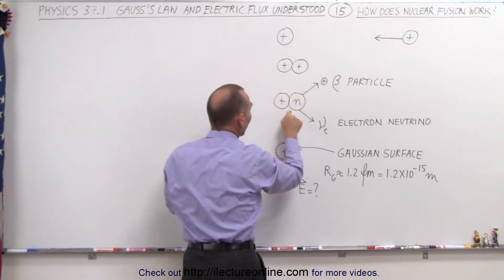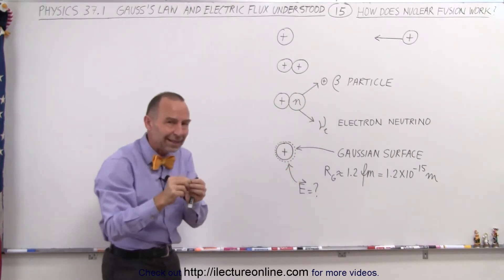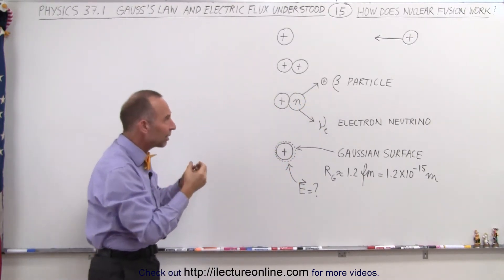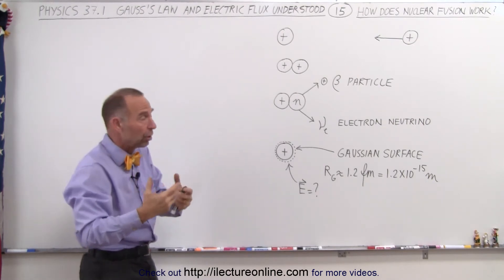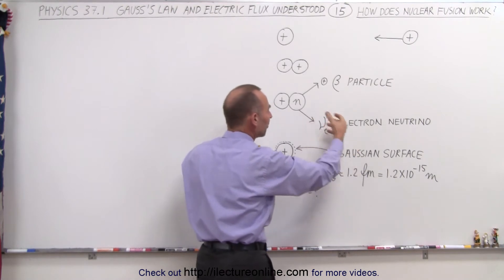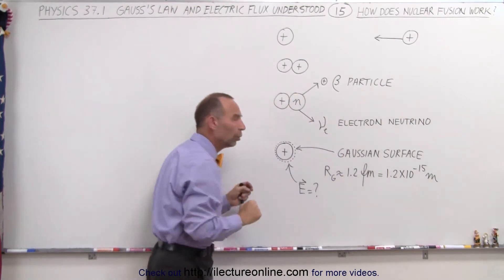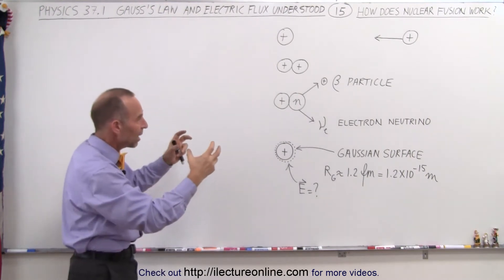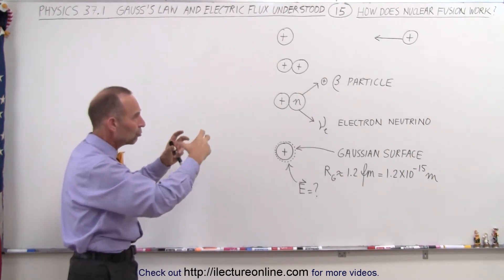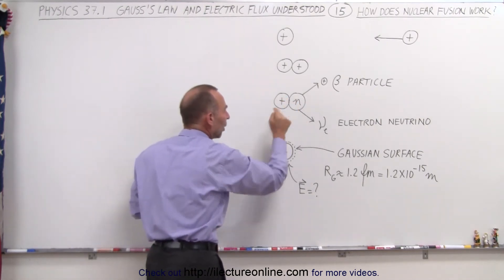Once it does, one of the protons will then convert into a neutron by expelling a beta particle, which is basically the anti-particle of the electron, a positive electron or called a positron, and also an electron neutrino that carries off part of the energy. And that then holds together, and it's now called a deuteron, because now the proton is being converted to a neutron, and it's basically heavy hydrogen. It's still a hydrogen atom with a neutron now.